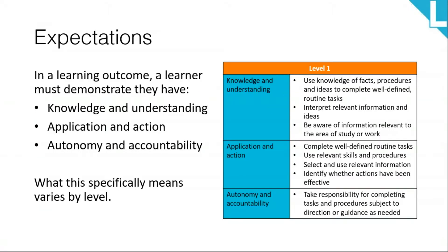In a learning outcome, a learner must demonstrate they have the knowledge and understanding, application and action, and the autonomy and accountability. What this specifically means varies by level, and I'll use the CACHE document to summarise this. I'll also give you an idea of the verbs you can expect to find in assessment criteria, using level one and level four as examples.